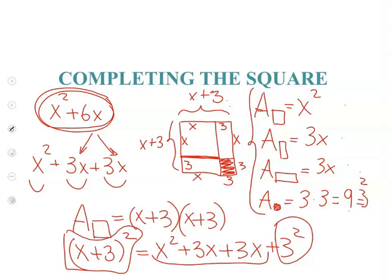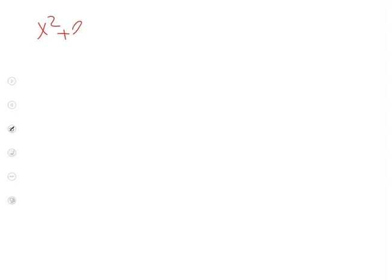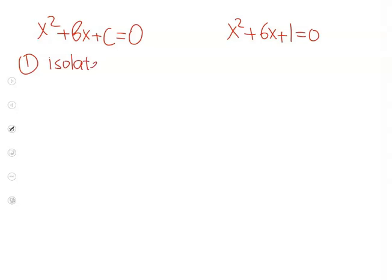Now let's have a look at an example of how to solve a quadratic equation using the completing the square procedure. I will be writing my rules here and you will be doing the same example on the right side of the board. We are solving an equation in standard form: x squared plus bx plus c equals 0. So standard form means we have 0 on the right side. We are going to work with this equation: x squared plus 6x plus 1 equals 0. Step number 1: we want to isolate the terms x squared plus 6x on one side, so we need to remove that 1.